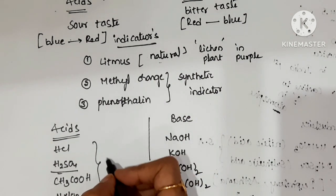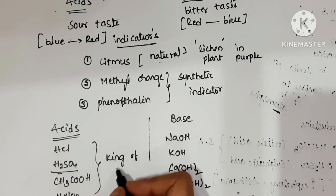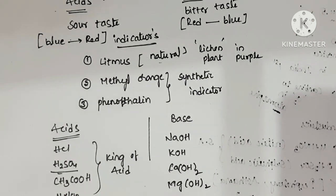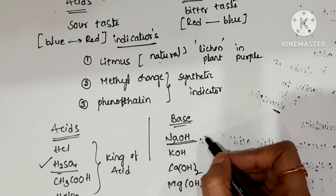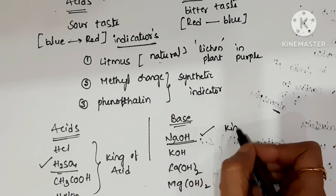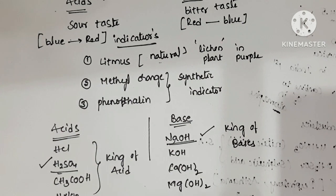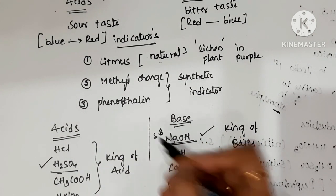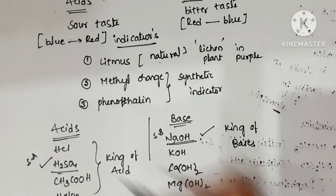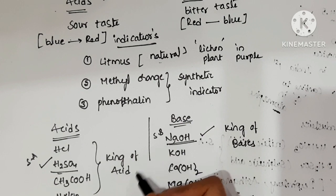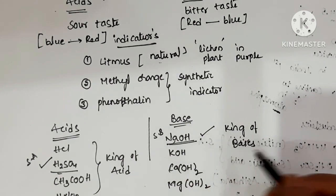Sulfuric acid is called the king of acids because it is a very, very strong acid among all acids. Similarly, sodium hydroxide is the king of bases because it is a very strong base. These are common exam questions, so you have to remember: sulfuric acid is the king of acids, and sodium hydroxide is the king of bases.